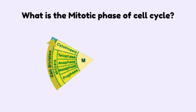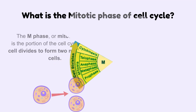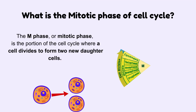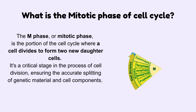What is the mitotic phase of the cell cycle? The M phase, or mitotic phase, is the portion of the cell cycle where a cell divides to form two new daughter cells. It's a critical stage in the process of cell division, ensuring the accurate splitting of genetic material and cell components.